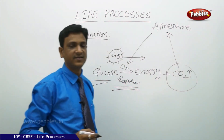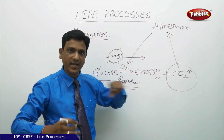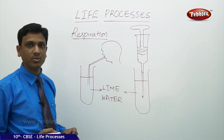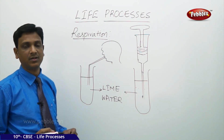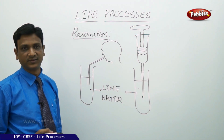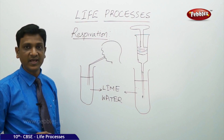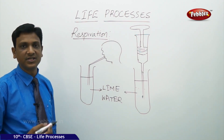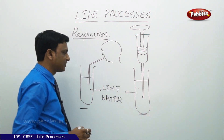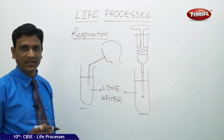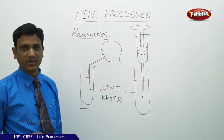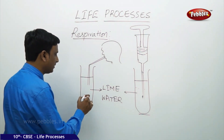We can prove that carbon dioxide is released during respiration using an experiment. The activity uses two test tubes with freshly prepared lime water. Note: this is lime water made from calcium oxide mixed with water — not lemon water. When lime water reacts with carbon dioxide, it forms calcium carbonate, CaCO3, and turns milky. So freshly prepared lime water is used in both test tubes.